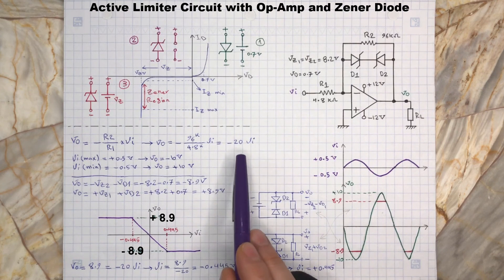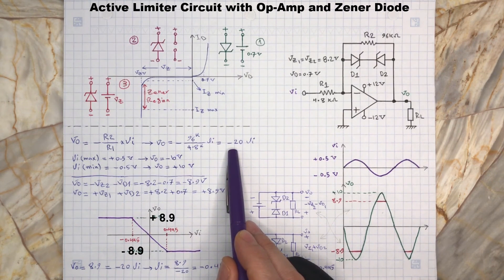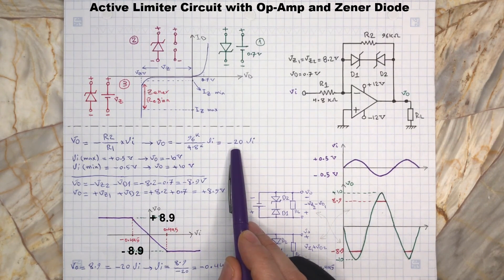The slope of this line is actually the gain of this amplifier, minus 20, which is R2 to R1.